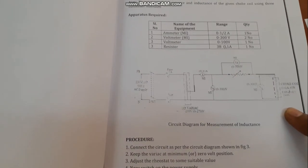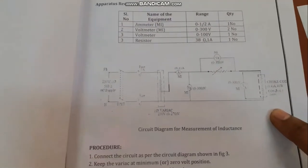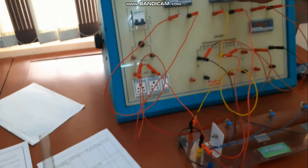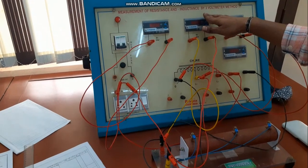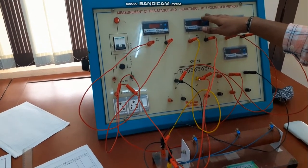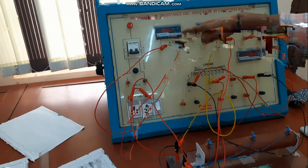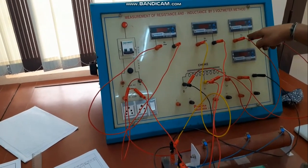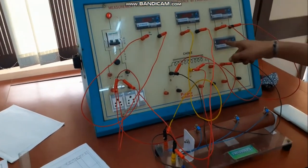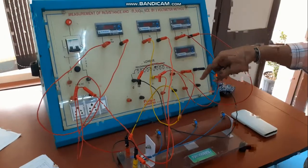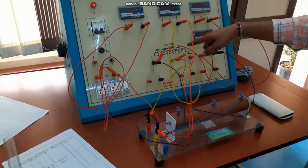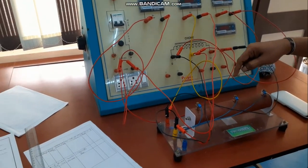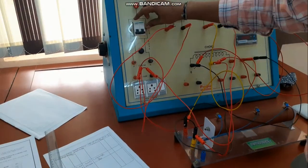This is the circuit diagram for making the connections. Now let us see the panel board where we conduct the experiment to measure the resistance and inductance of a choke coil using the 3 voltmeter method. These are the 3 voltmeters V1, V2, V3, and this is the ammeter. Here is the choke coil and this is the resistance.